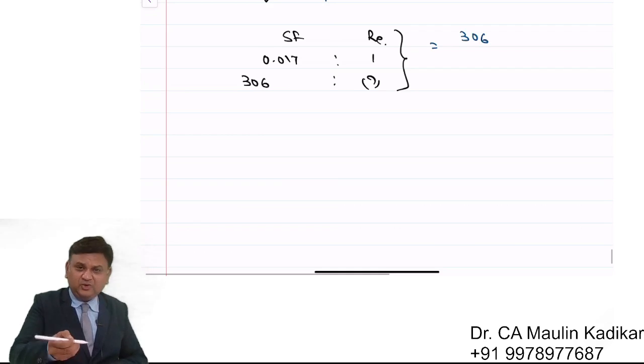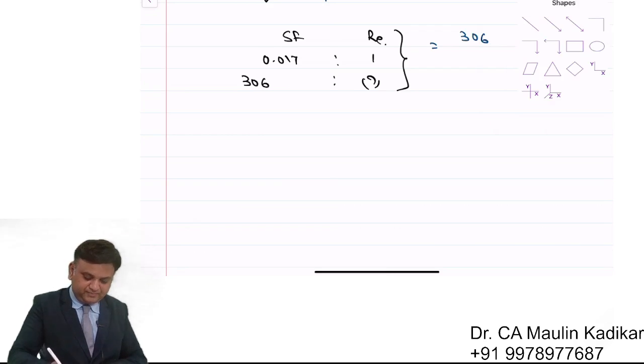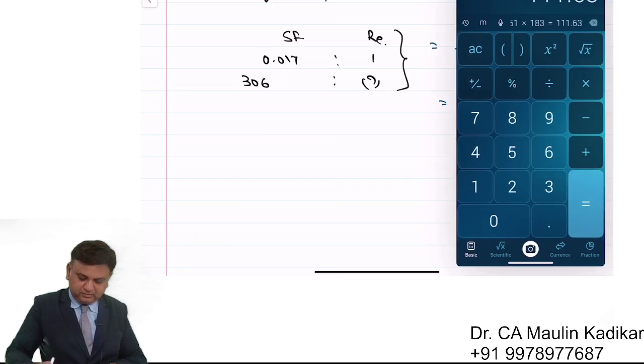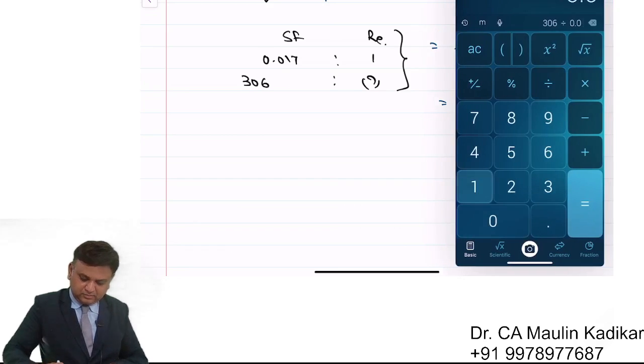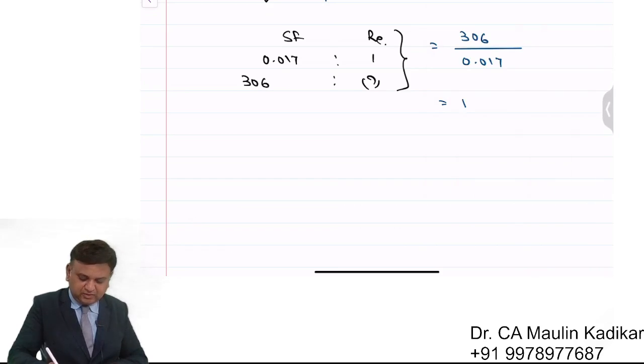306 into 1, that does not make sense. Divided by 0.017. That comes to rupees 18,000.